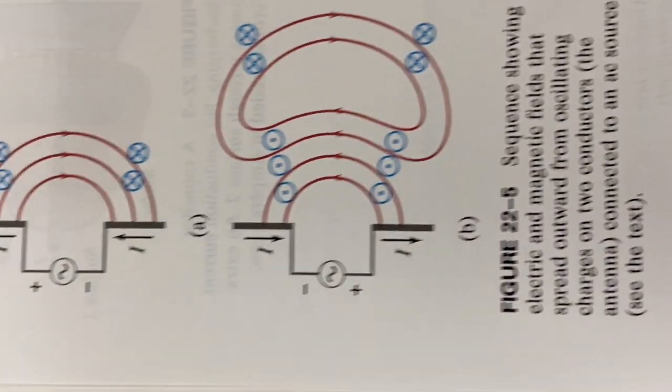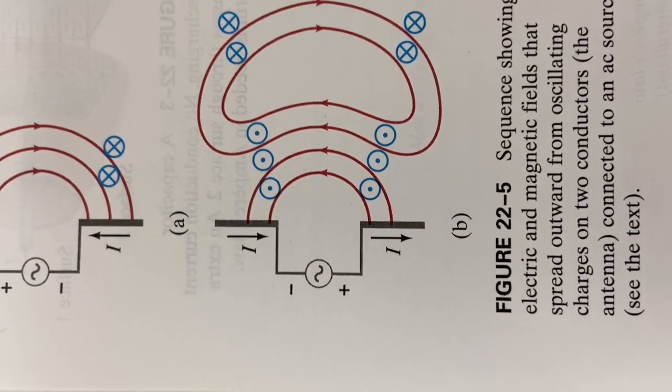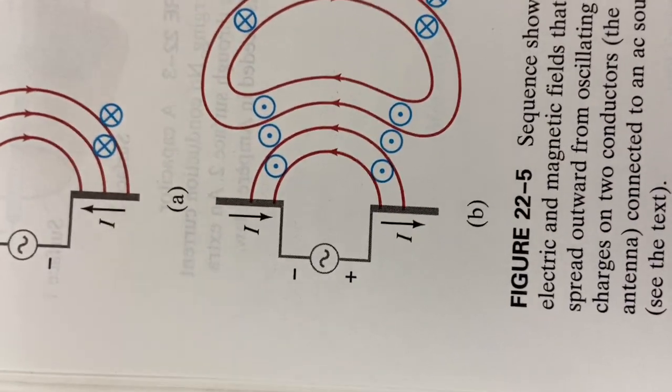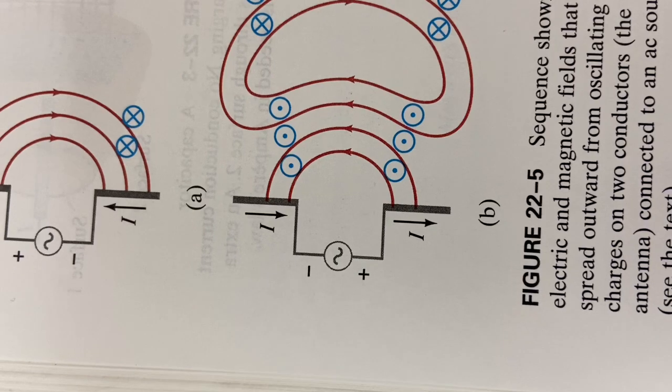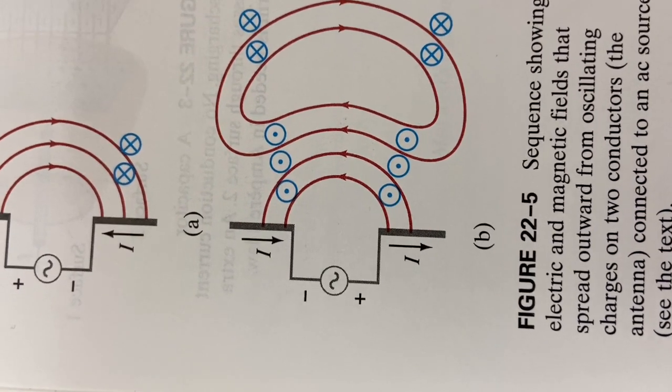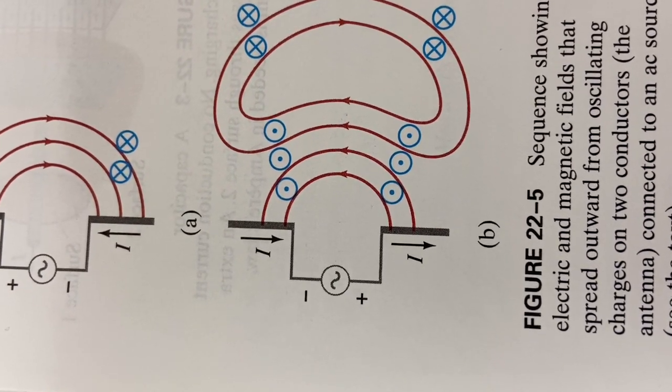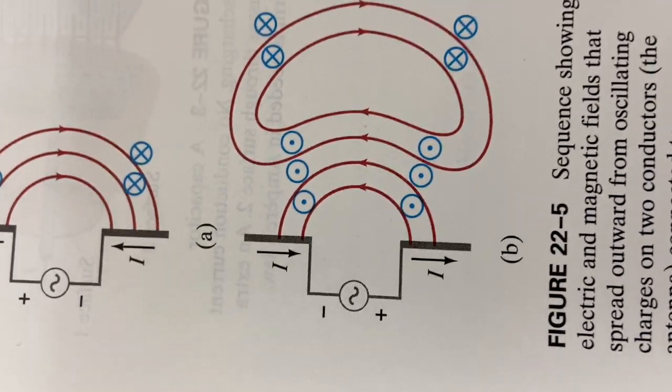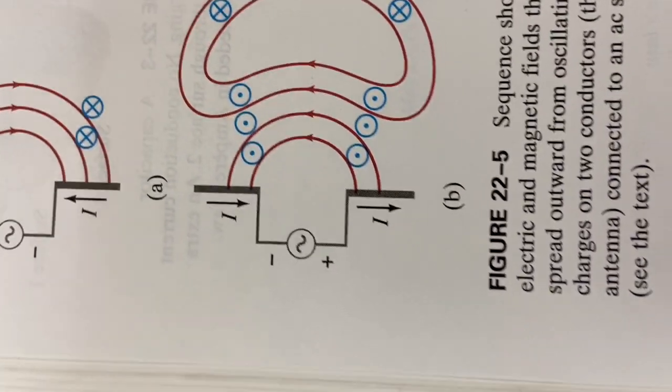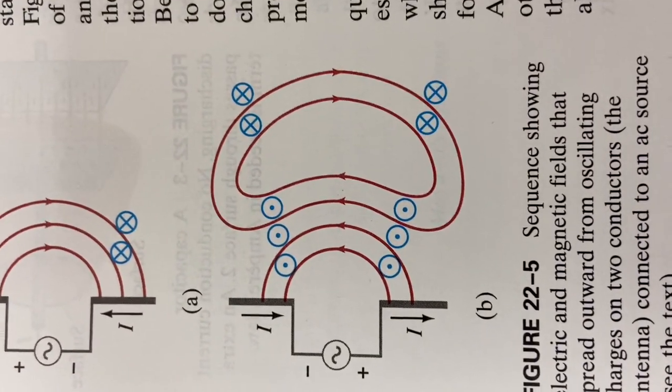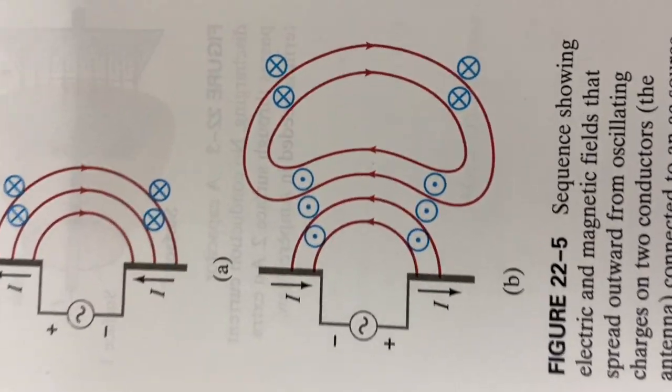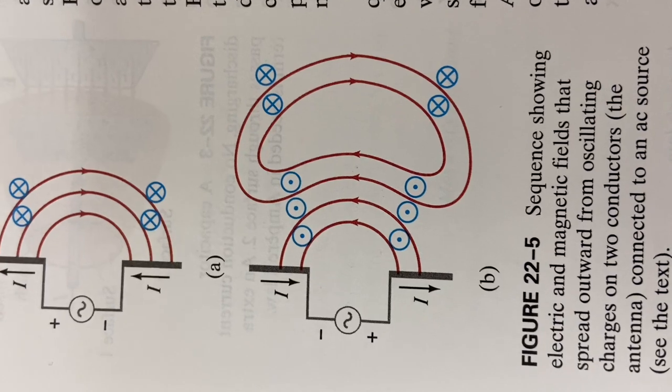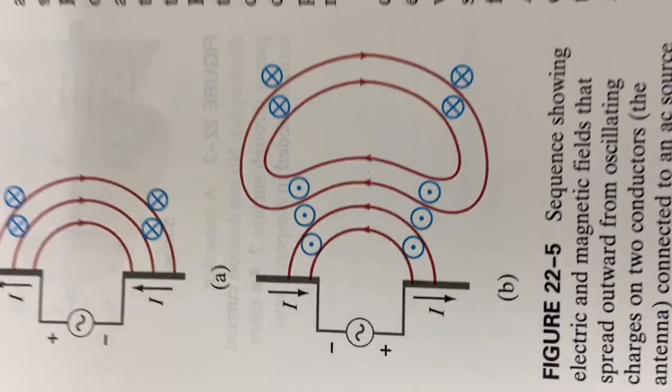Well, then what we're going to do is we're going to switch the direction of electricity. And so now the electric field is going the opposite way, and the magnetic field becomes dots instead of x's. So the frequency at which we switch that direction is going to be the frequency at which the waves switch. So you're going to get crests and troughs, like a transverse wave.